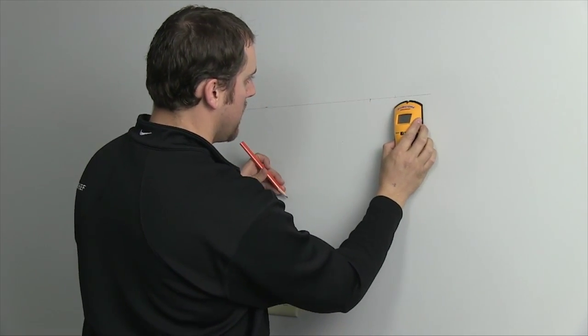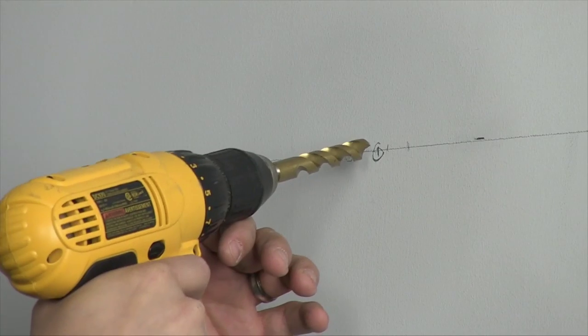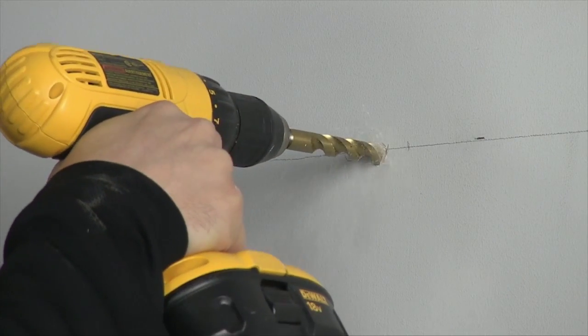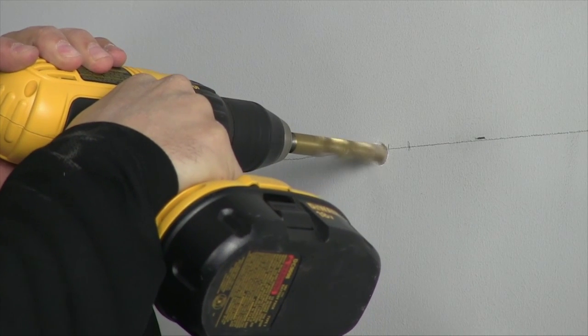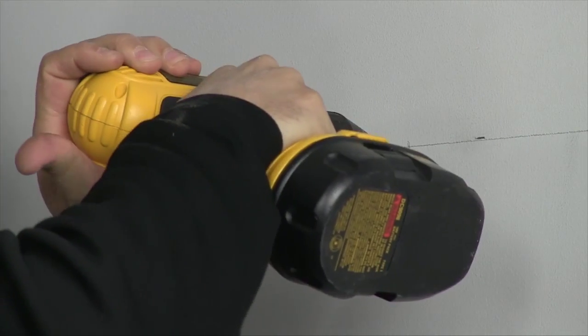Mark the stud locations and drill a half inch pilot hole through each. The mount can be installed on either wood studs using lag bolts or steel studs using plastic sleeve anchors.